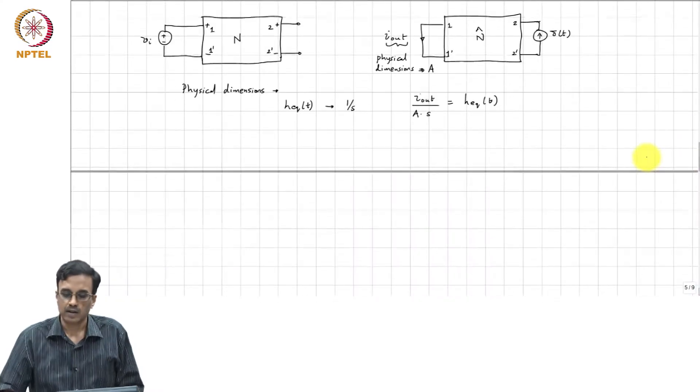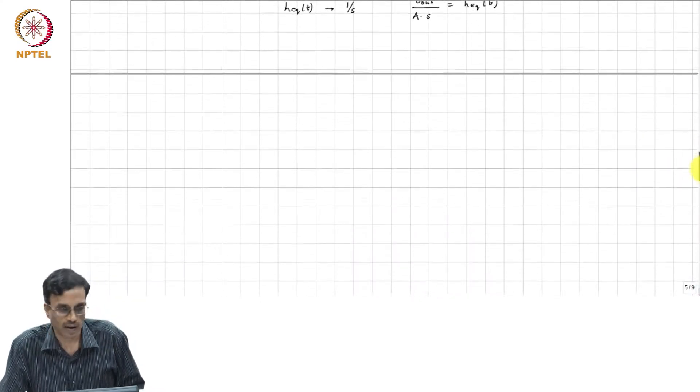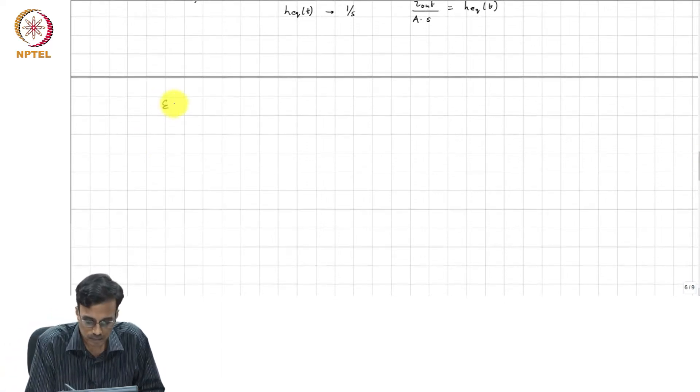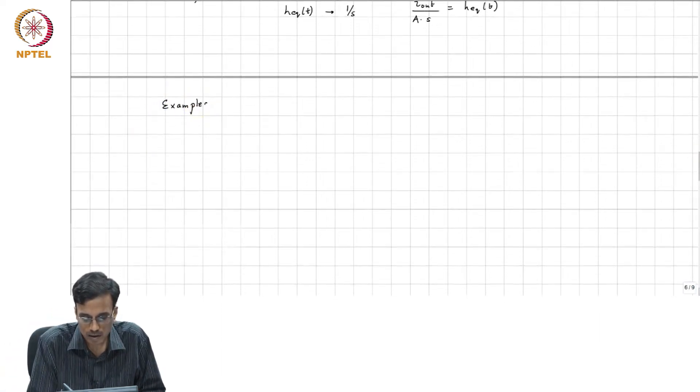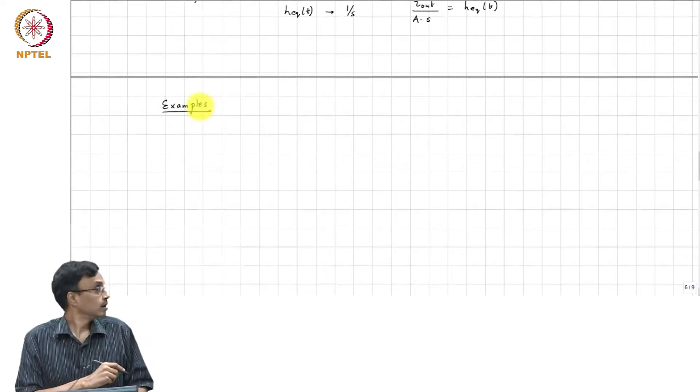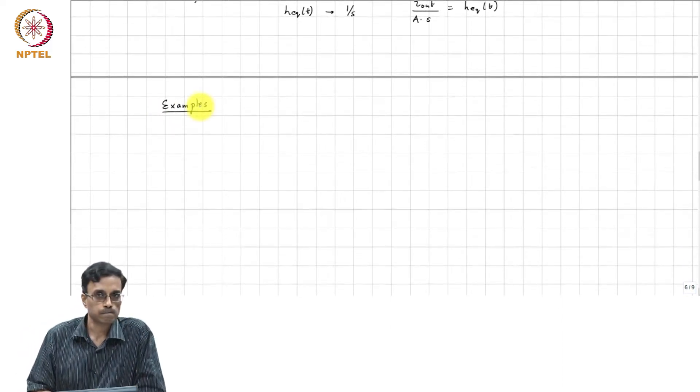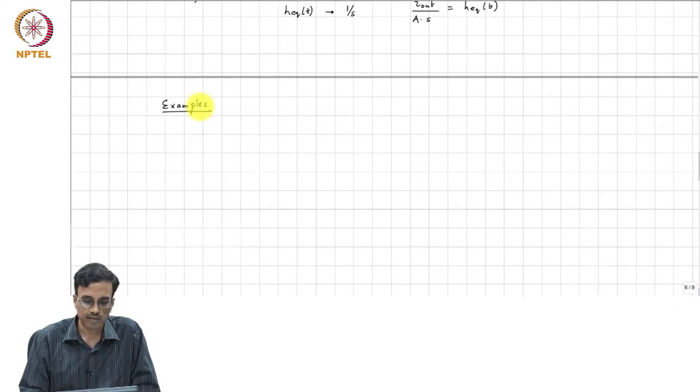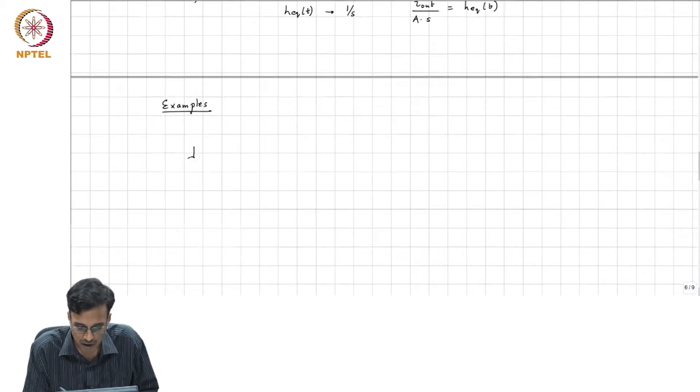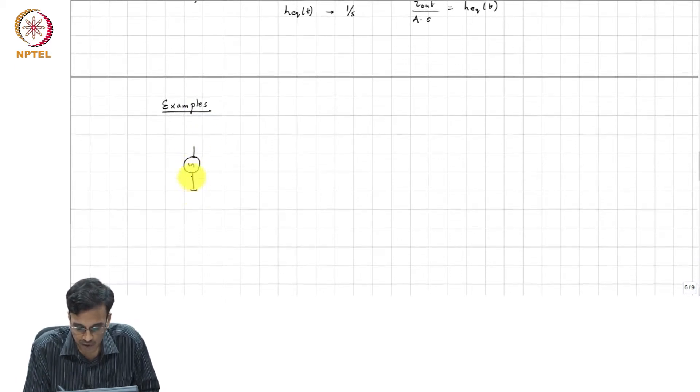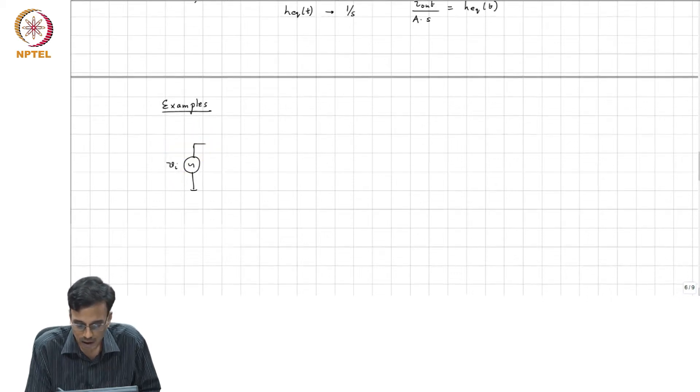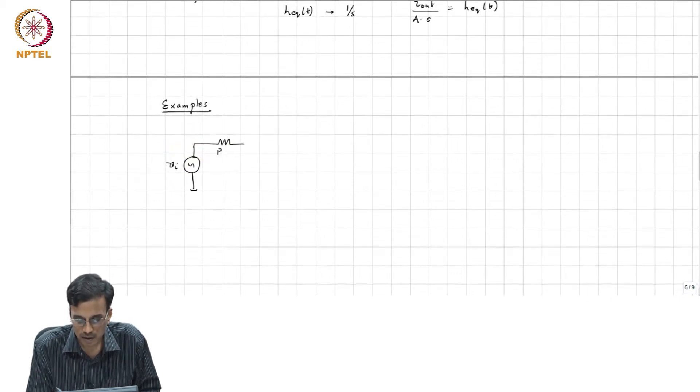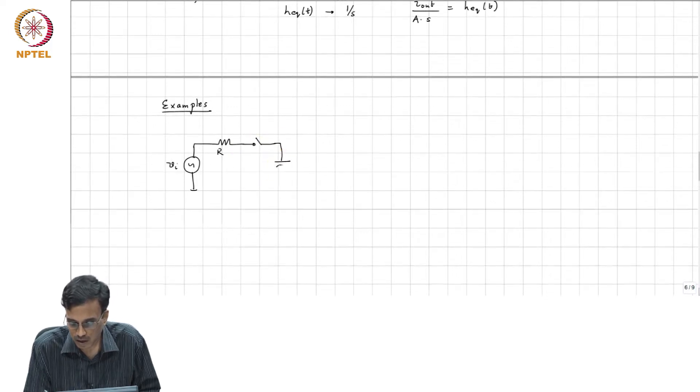Okay, so let us now do some examples. And as usual, we will begin with the simplest possible network that we can think of. We have a voltage source, a resistor, a periodically operated switch and a capacitor C.